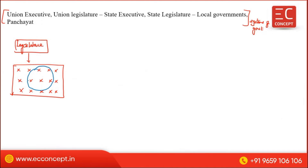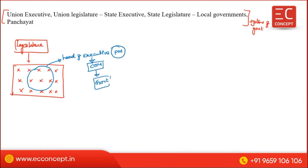We are going to talk about the executive in the legislature. This is the parliamentary form of government. The head of the executive is the President, and the head of government is the Prime Minister. The duties and powers of the Prime Minister include leading the Council of Ministers. The State Executive mirrors the Union Executive — the concept is the same but at the state level.